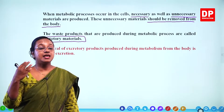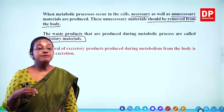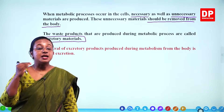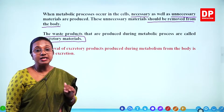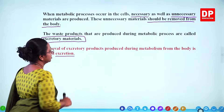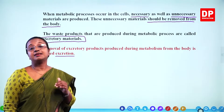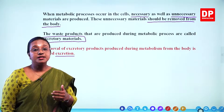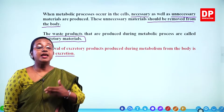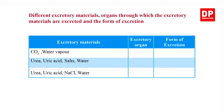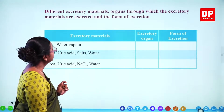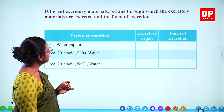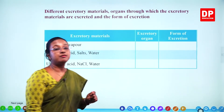During metabolic processes, excretory materials are produced and they have to be removed from the body — that process is called excretion. Now we will see what these excretory materials are and the organs that help to excrete them. We have a table showing the excretory materials, organs through which they are excreted, and the form of excretion.